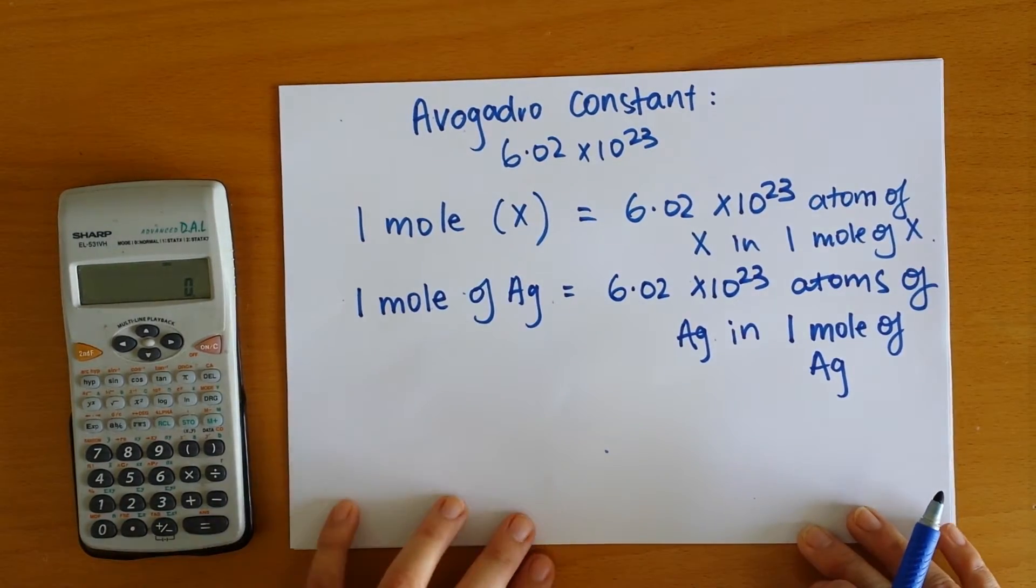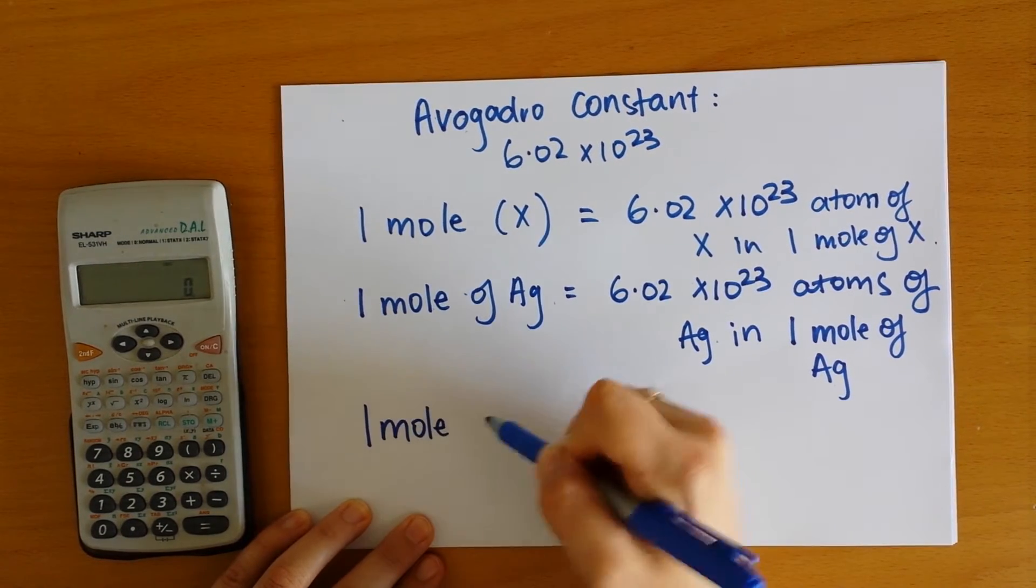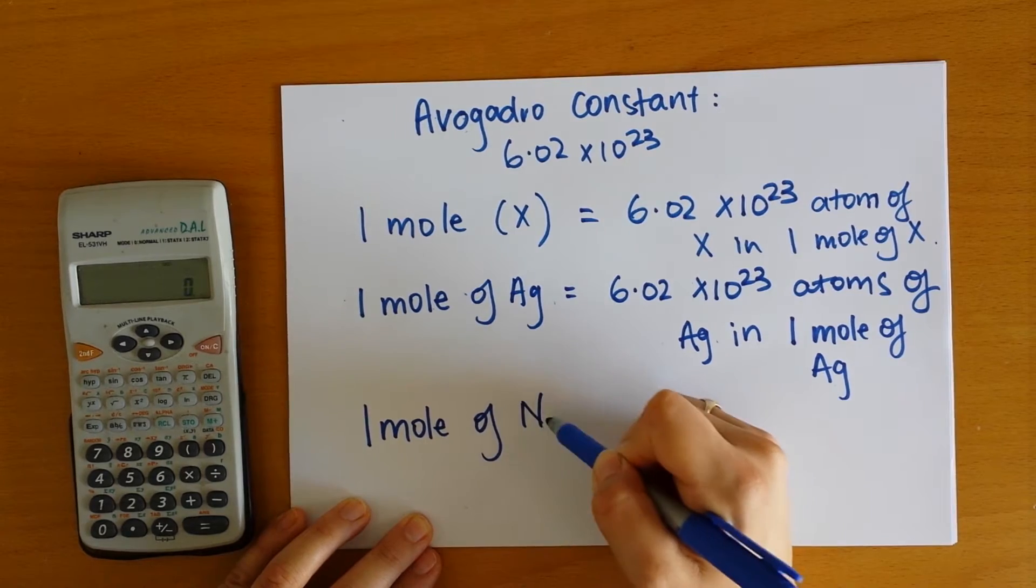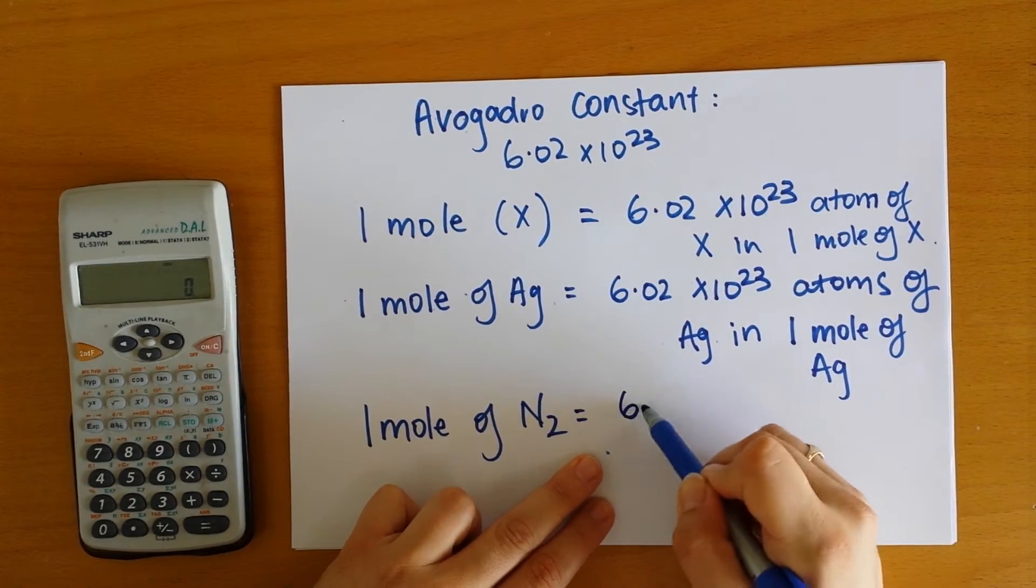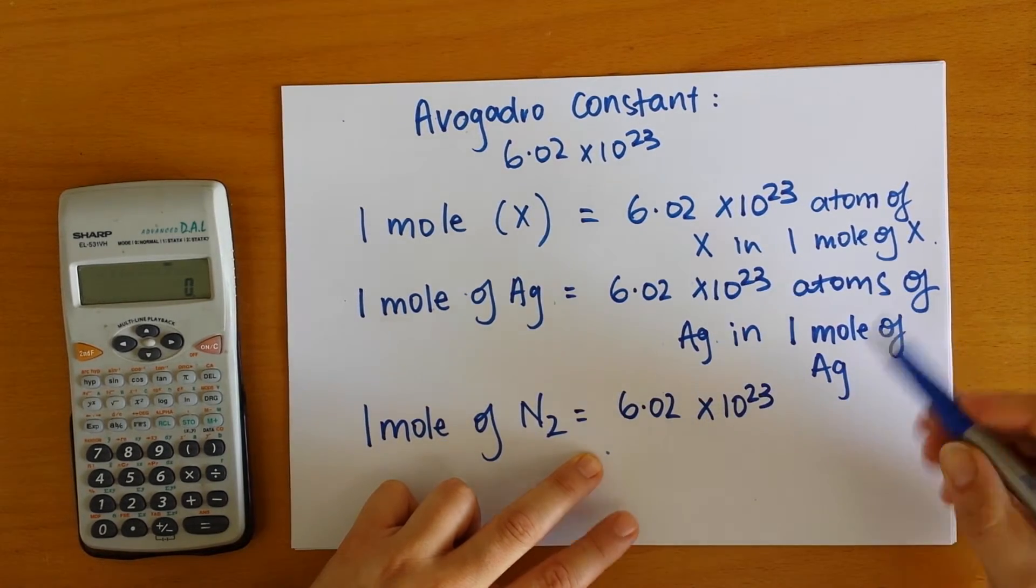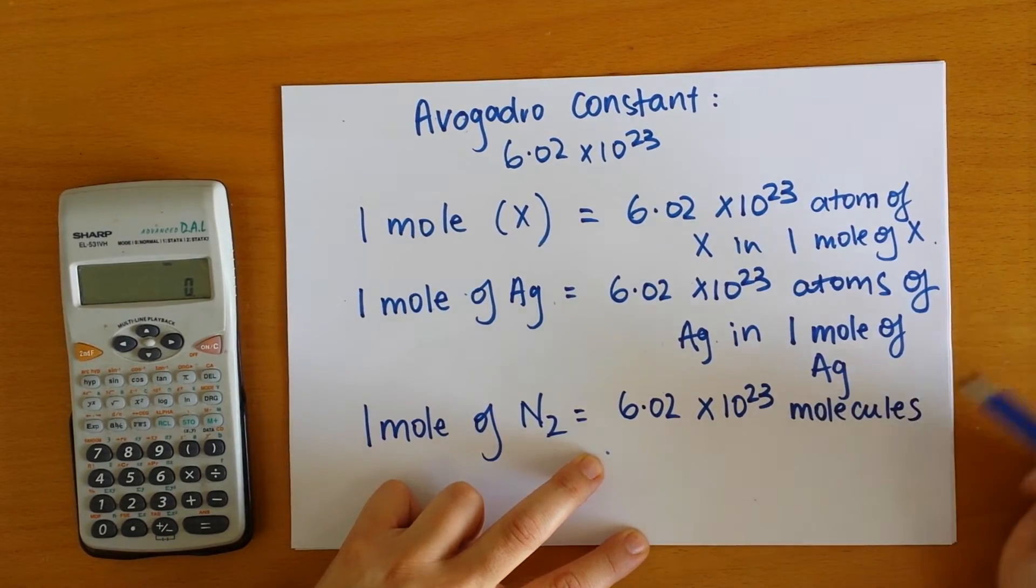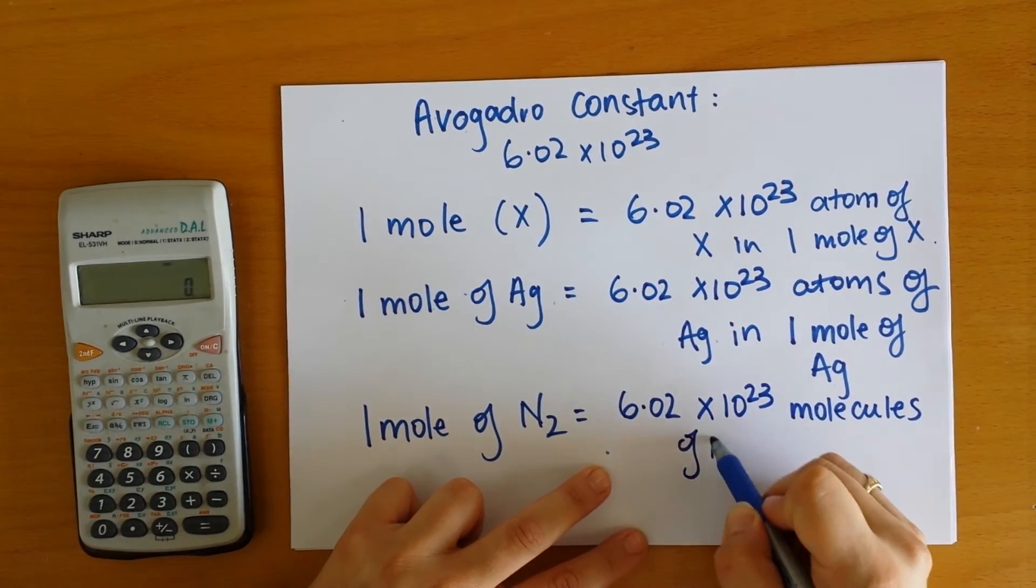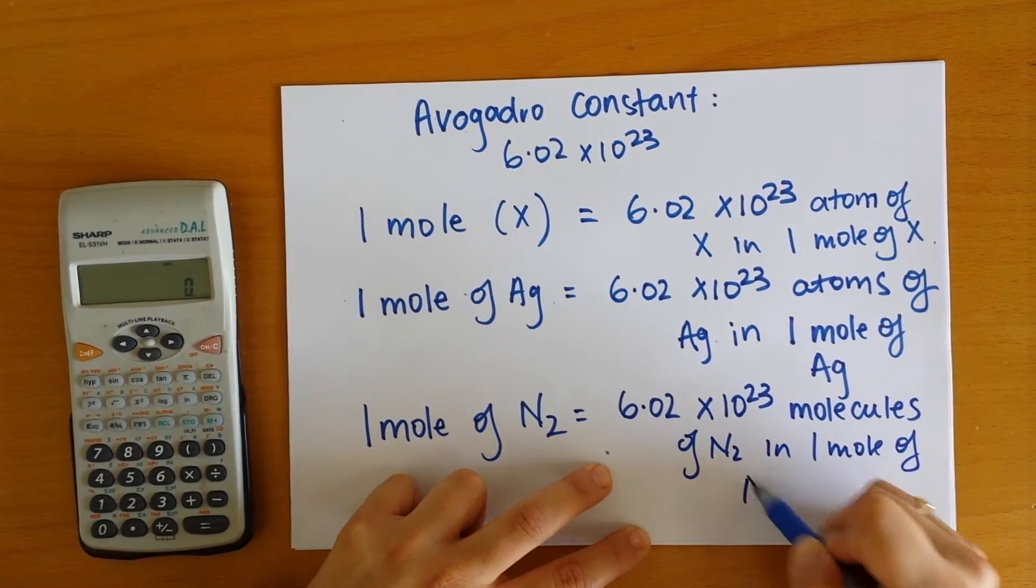So if we were to have a look at something like nitrogen and look at one mole of nitrogen, what this means is we have 6.02 times 10 to the 23 molecules. Now this is an important distinction of nitrogen in one mole of nitrogen.